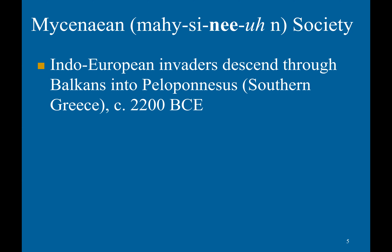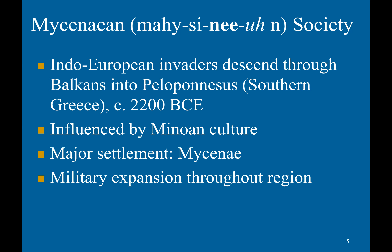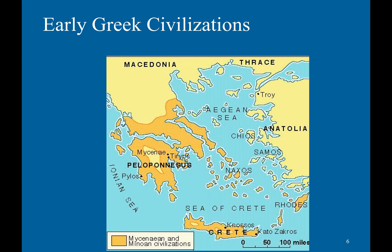The Mycenaean society: Indo-European invaders descended through the Balkans into the Peloponnesus, southern Greece, around 2200 BCE. They were influenced by Minoan culture when they arrived and made a major settlement called Mycenae. They began to militarily expand throughout the region. This is a map showing the extension of Mycenaean and Minoan society, occupying southern Greece, the Peloponnesus, some islands, and Crete.